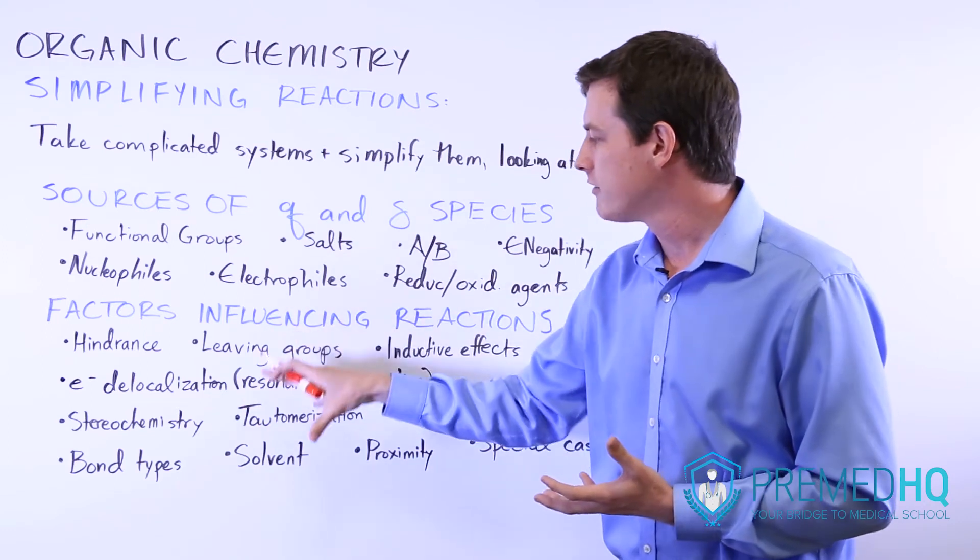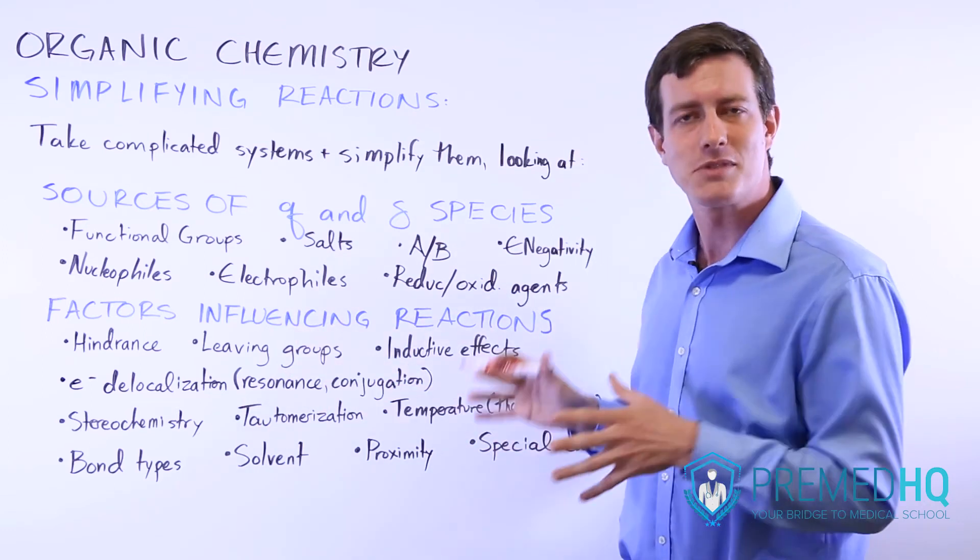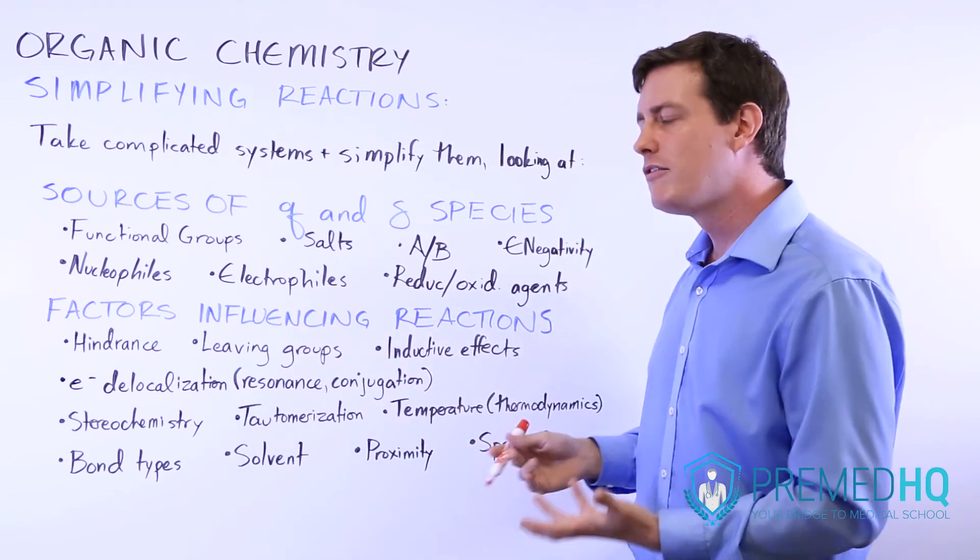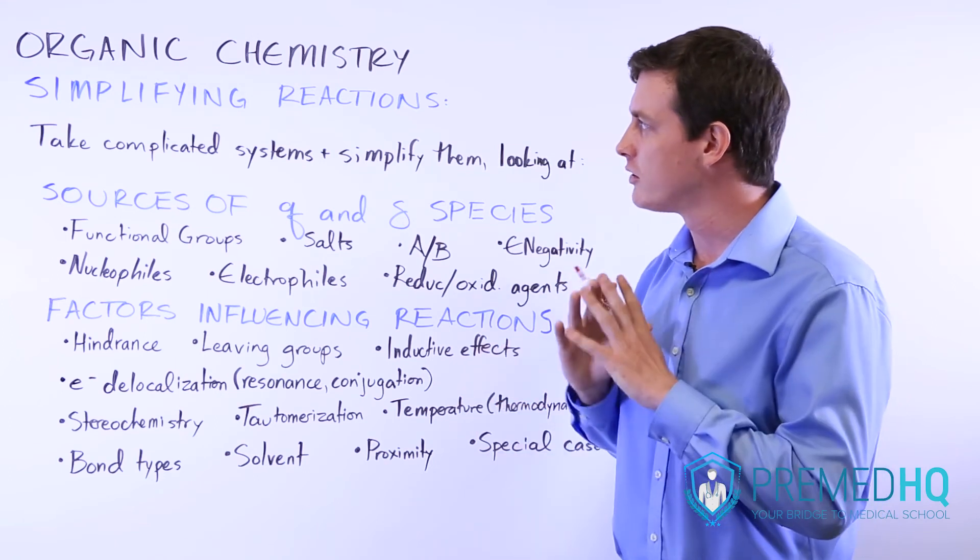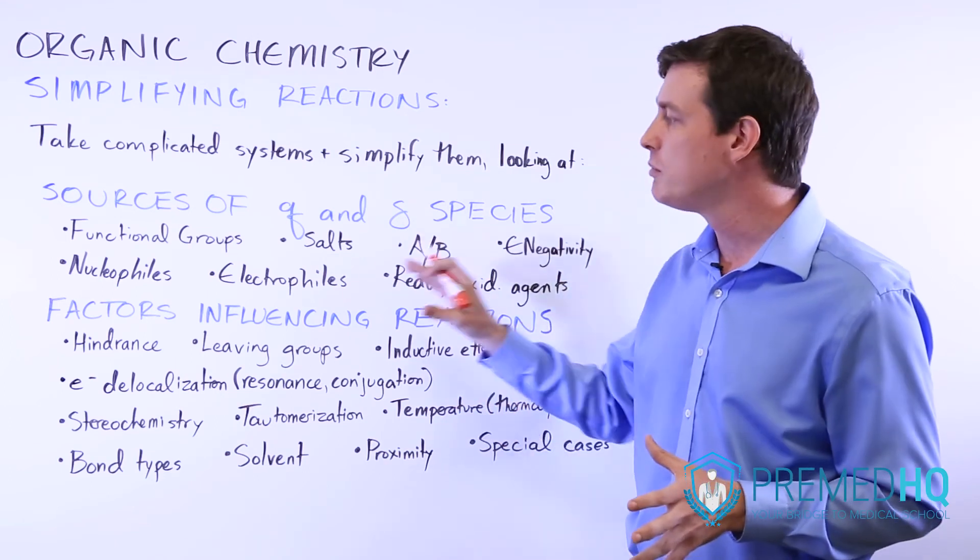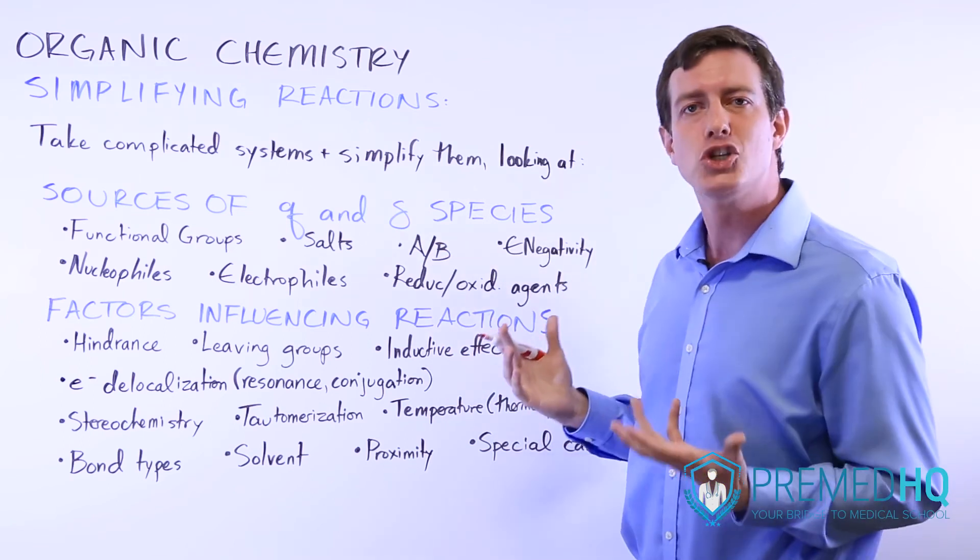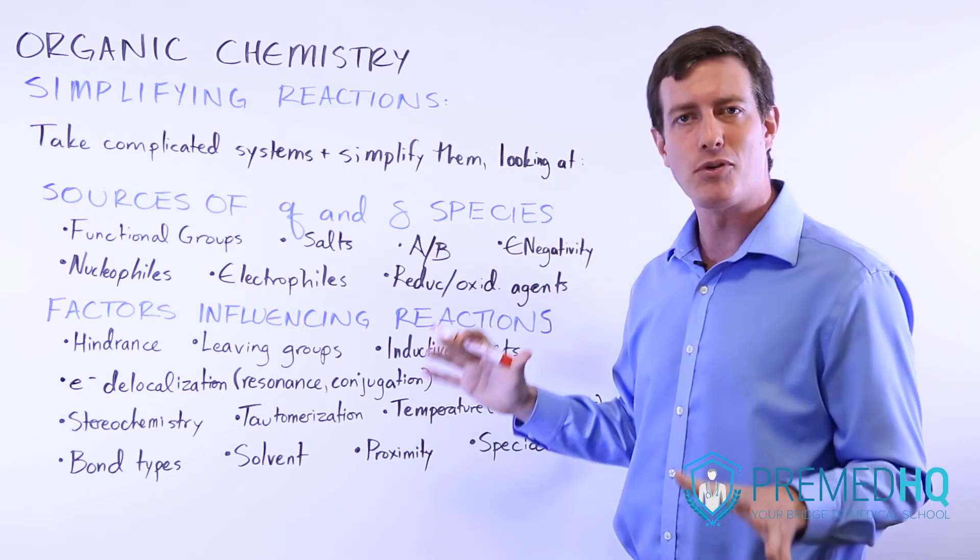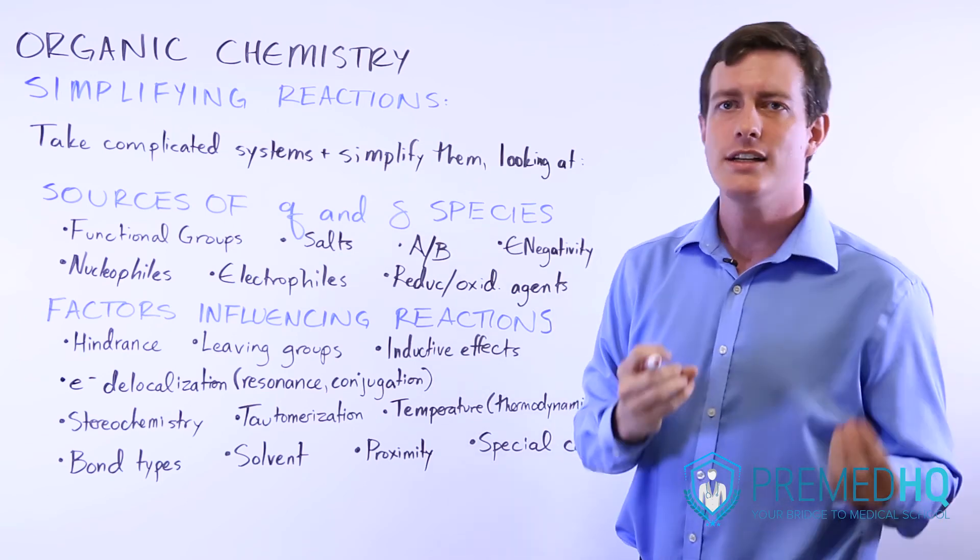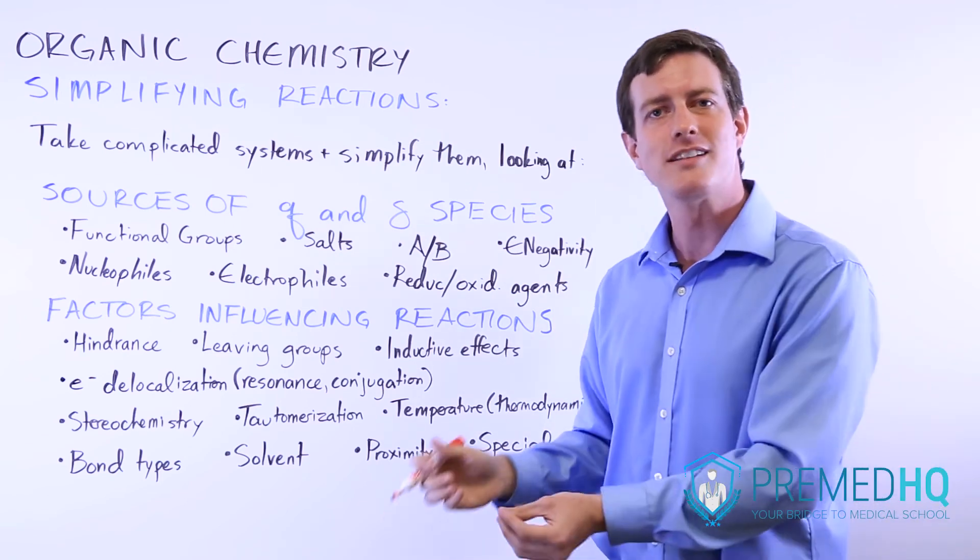And so all of these different factors at certain times and in certain environments can influence the end result of an organic chemistry environment. And so we'll be going through these piece by piece and looking at the major ways that you can simplify a problem and then quickly tackle it and figure out what is most likely to occur.